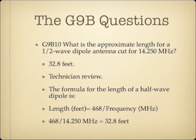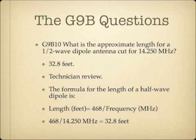What is the approximate length for a half wave dipole antenna cut for 14.250 megahertz? The answer is 32.8 feet. This is technician review. The formula to find the length of a half wave dipole is: length in feet equals 468 divided by frequency in megahertz. So it's 468 divided by 14.250 MHz, which equals 32.8 feet.